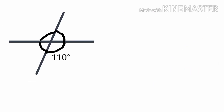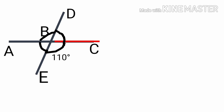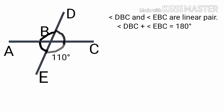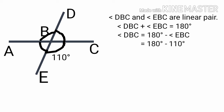Let's mark points A, B, C, D and E. We know angle DBC and angle EBC are a linear pair. Therefore angle DBC plus angle EBC is equal to 180 degrees. Angle DBC is equal to 180 minus angle EBC, that is equal to 180 minus 110, that is equal to 70 degrees.